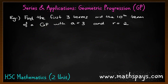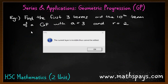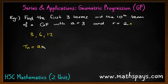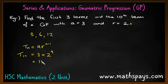Let's look at an example: find the first three terms and the tenth term of a GP with a equals 3 and r equals 2. We know that a equals 3, so that first term is 3. The common ratio is 2, which means I'm multiplying by 2: so 3 times 2 is 6, 6 times 2 is 12. If I want to find the tenth term, I use Tn equals a times r to the power of n take away 1, which for T10 gives us 3 times 2 to the power of 9, because 10 take away 1 is 9, and that gives us 1536.